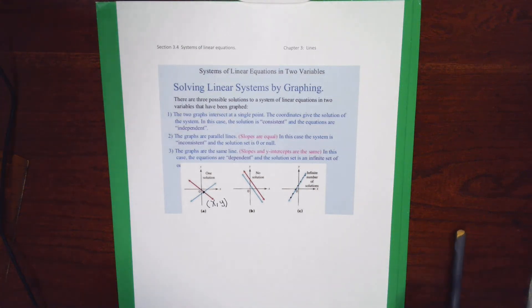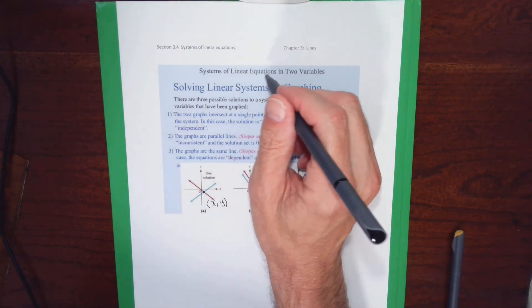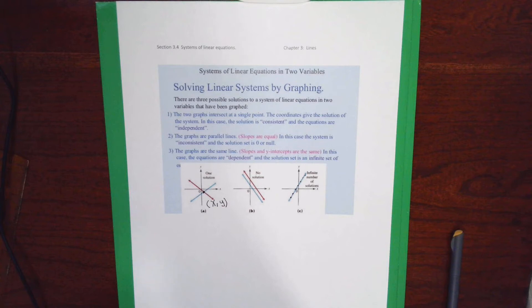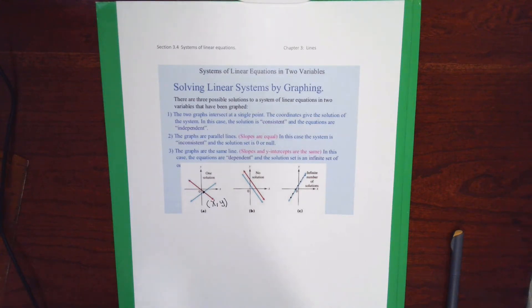The title of this section is Systems of Linear Equations in Two Variables. Each problem presented will give two line equations, and we'll determine what happens when those two lines are graphed. Once we determine what happens, we'll write a solution. First, we'll physically graph the lines, then learn algebraic techniques to determine what would happen without having to graph.